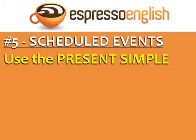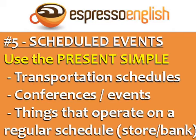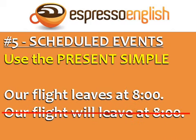For scheduled events in the future, use the present simple. Scheduled events are things like transportation schedules, conferences and events, and things that operate on a regular schedule, like the opening or closing of a store or bank. So it's more common to say 'our flight leaves at eight o'clock' instead of 'our flight will leave at eight o'clock.'